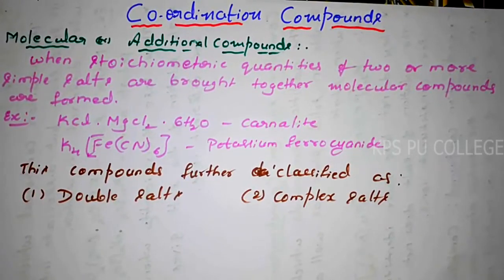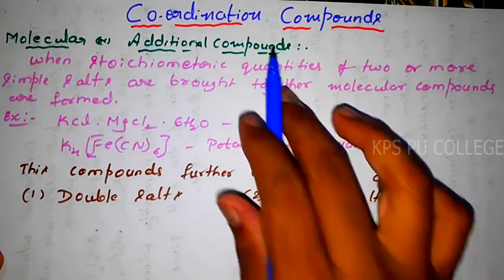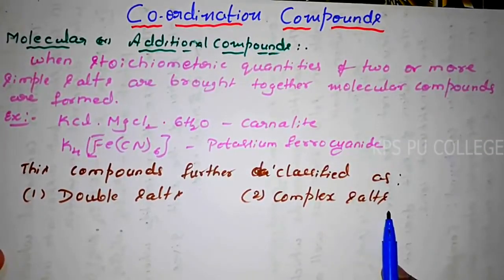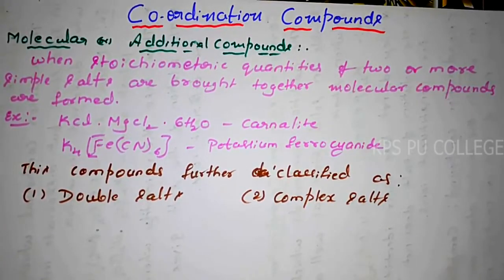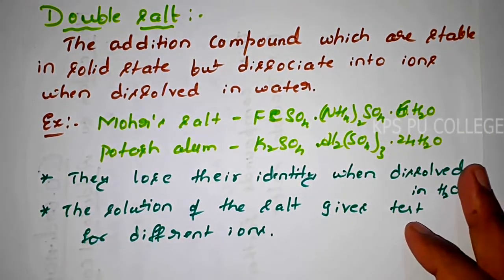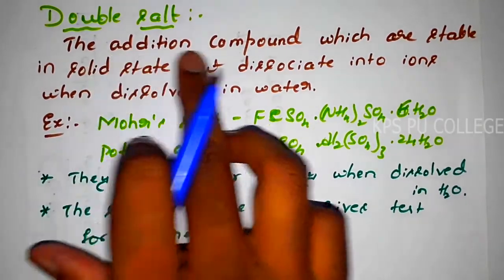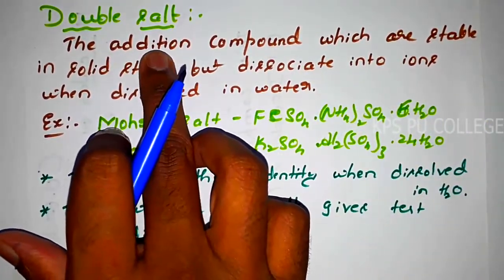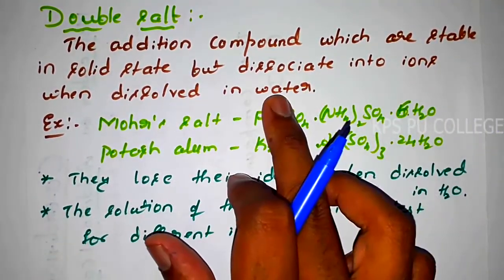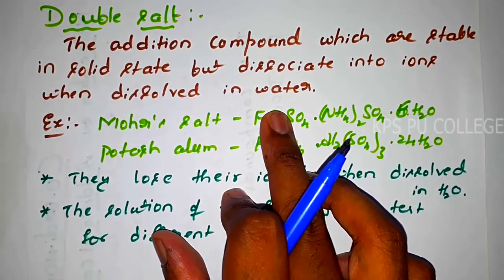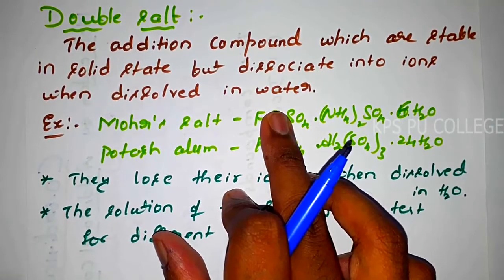Now let's differentiate between double salt and complex salt. What is a double salt? Double salt is a molecular or additional compound which is stable in solid state but dissociates into ions when dissolved in water — freely available ions are formed.